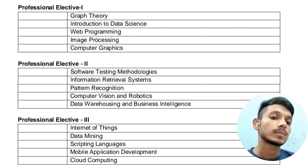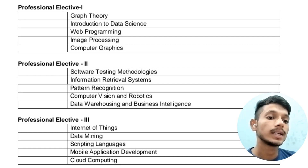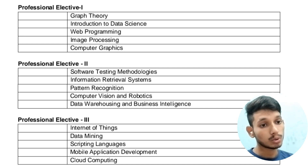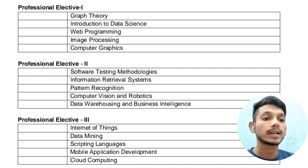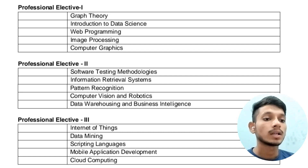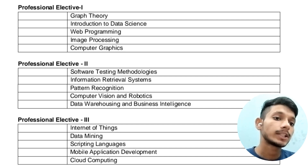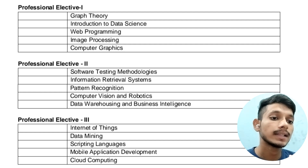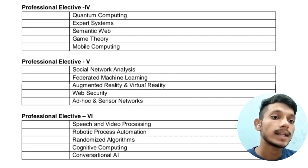In Professional Elective 2, the subjects are: Software Testing Methodologies, Information Retrieval Systems, Pattern Recognition, Computer Vision and Robotics, and Data Warehousing and Business Intelligence. In Professional Elective 3, the subjects available are: Internet of Things, Data Mining, Scripting Language, Mobile Application Development, and Cloud Computing.